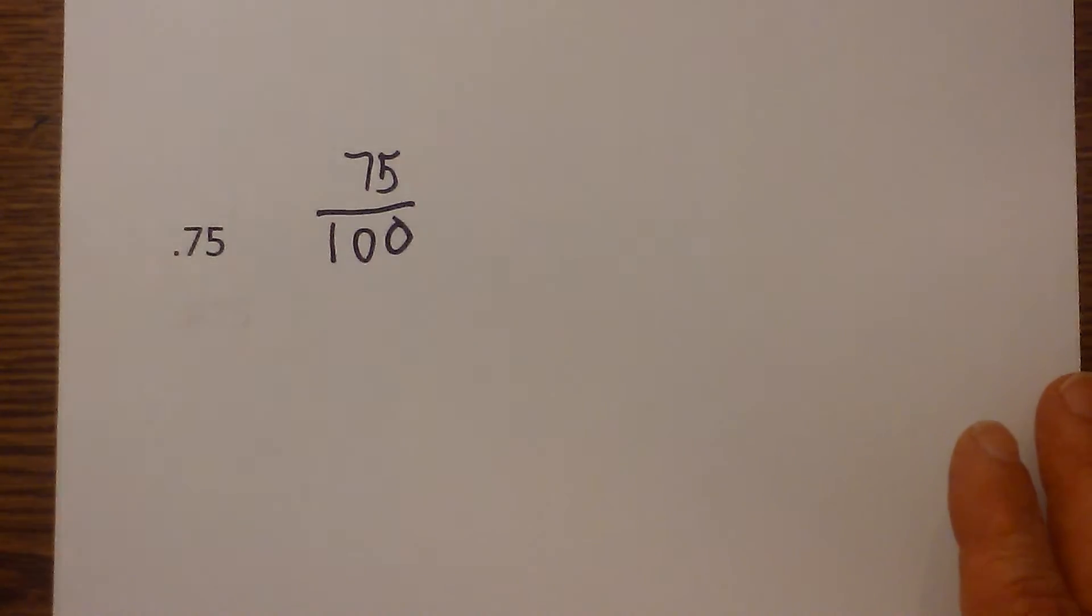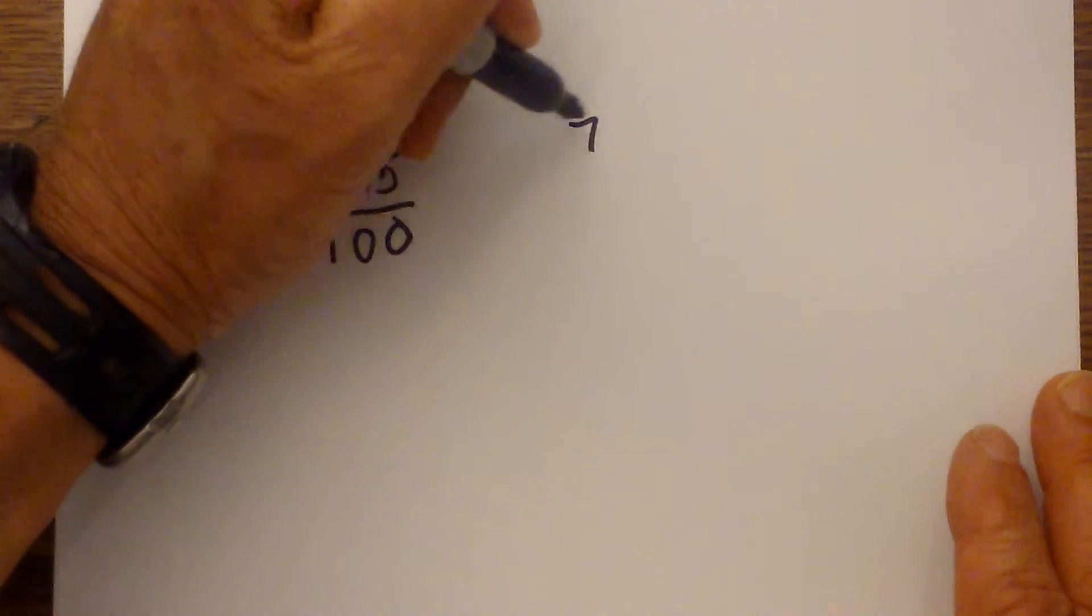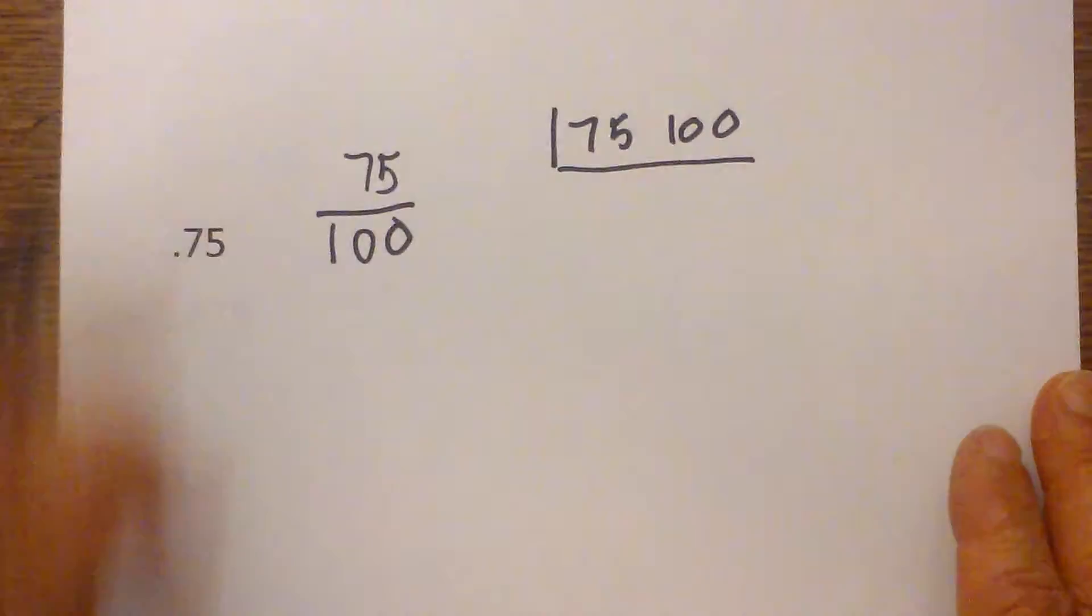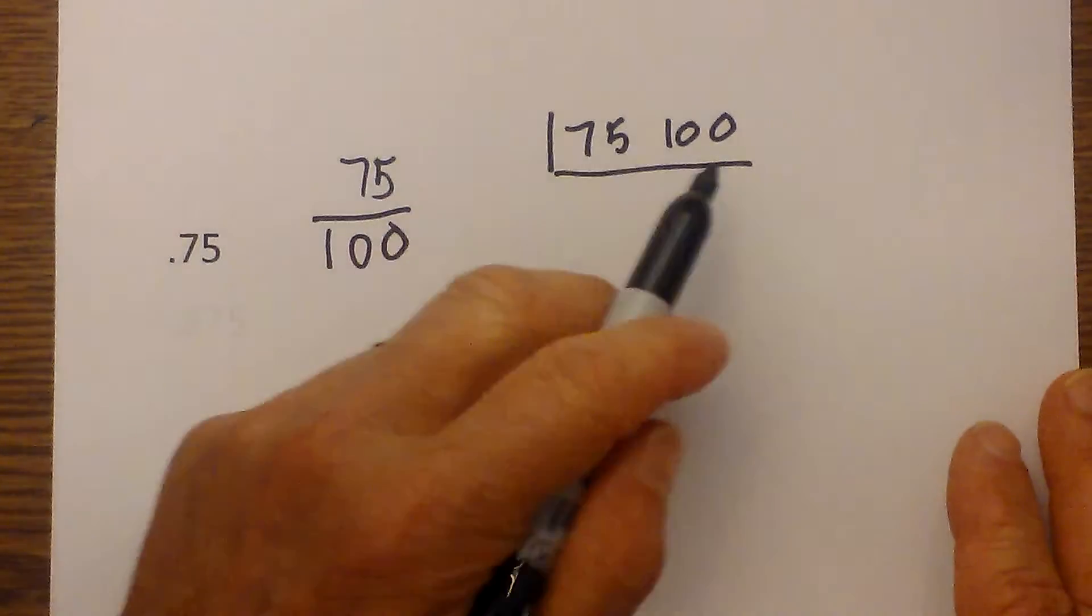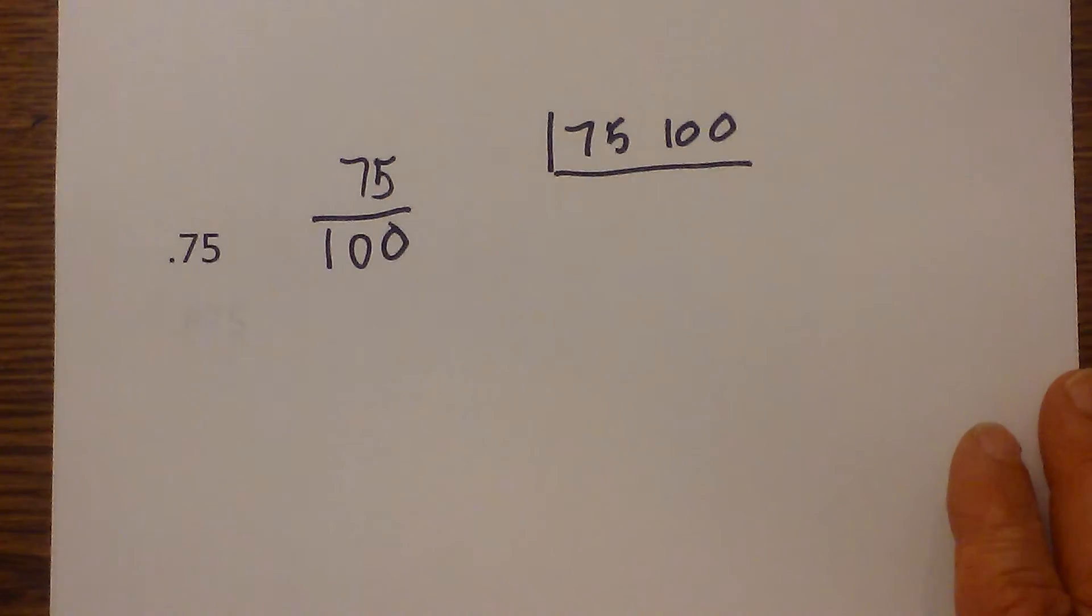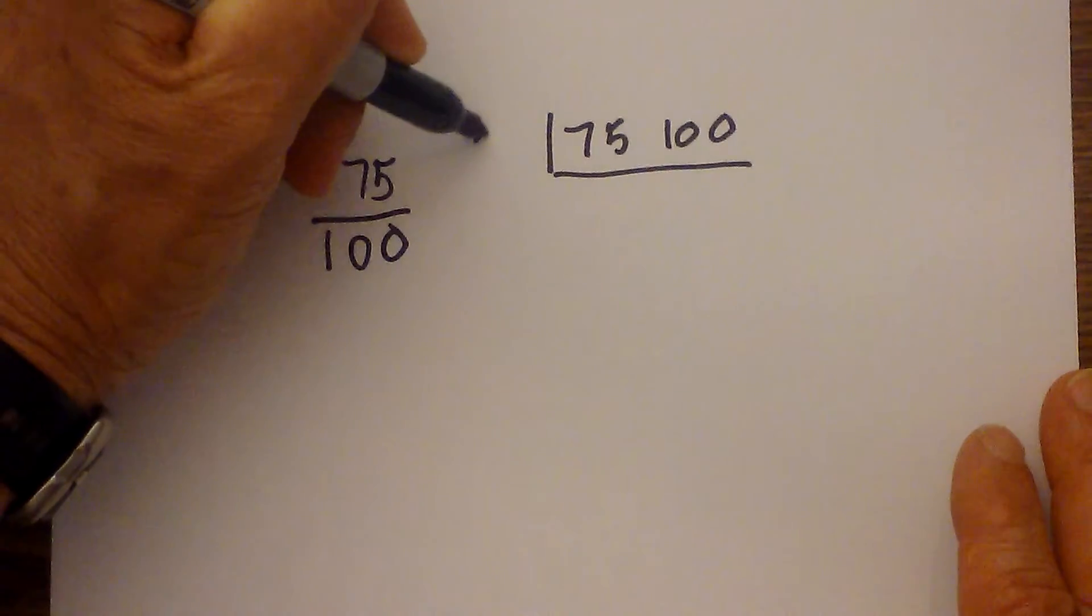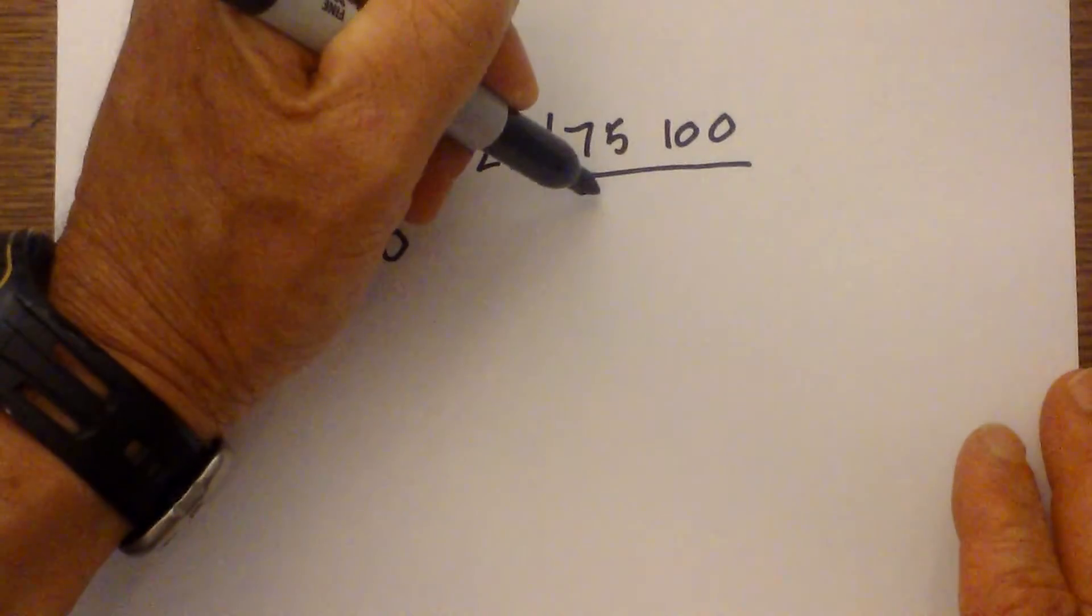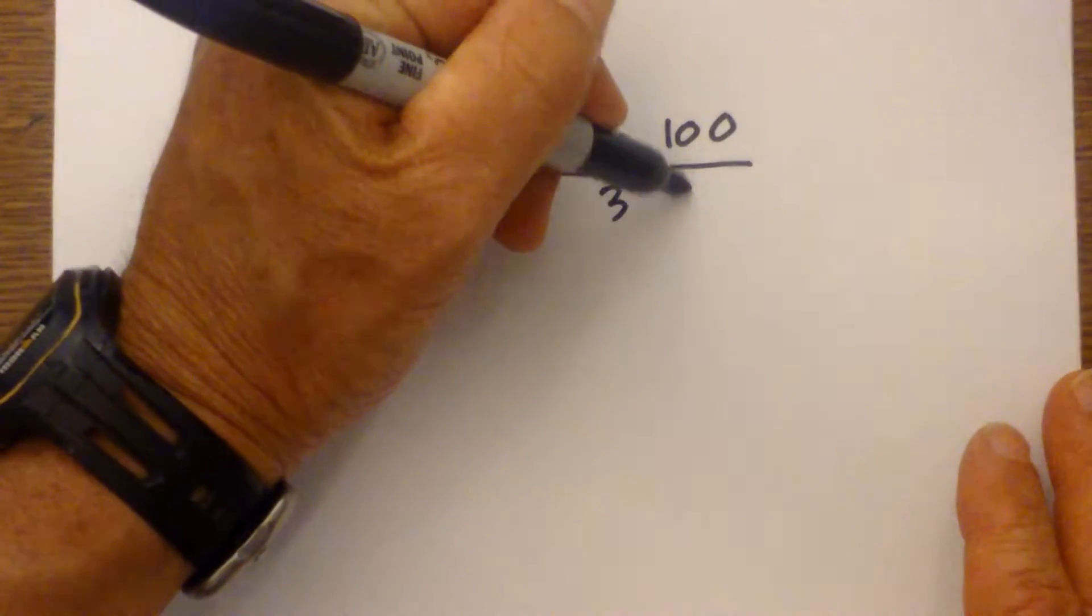I then need to simplify this and I'm going to show you a simple way of simplifying. Write 75 and 100 and then write a line like this underneath. Then try to figure what goes into 75 and 100 evenly. I can use 5 or I can go 25 because I know my 25's, and I know 25 goes into 75 three times and 25 goes into 100 four times.